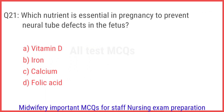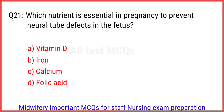Q21. Which nutrient is essential in pregnancy to prevent neural tube defects in the fetus? The right answer is option D: Folic acid.